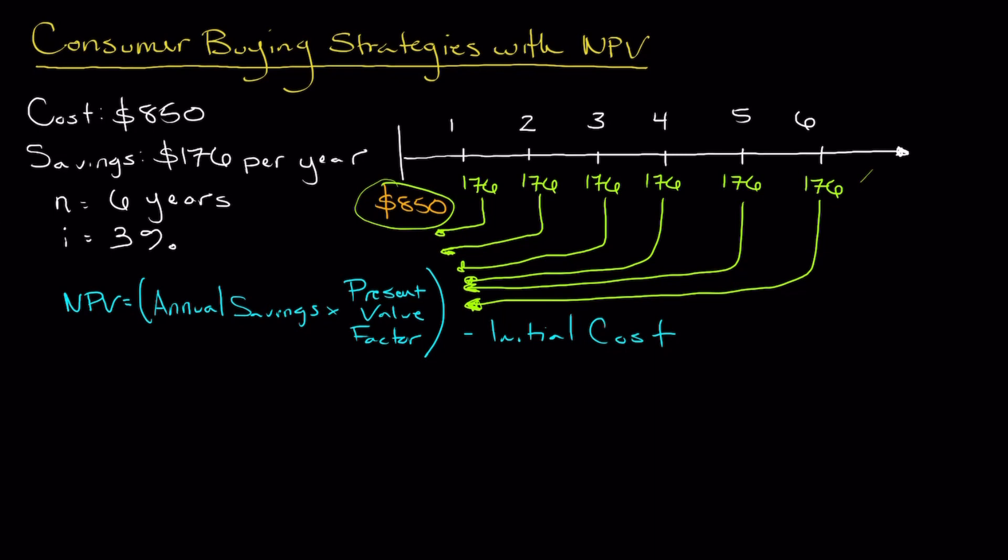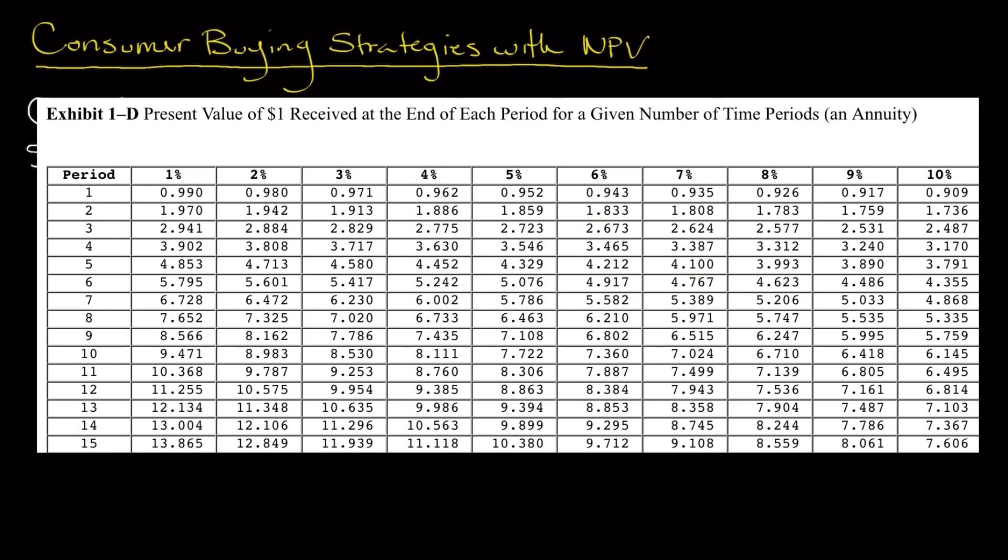So part of this information we know—we obviously have access to the annual savings and of course our initial cost. The present value factor is something that we're not aware of at this point in time. So what I'm going to show you real quick on the screen is a present value table. This particular present value table is of a dollar received at the end of each period for a given number of time periods, which would refer to an annuity since it's a consistent amount of payments.